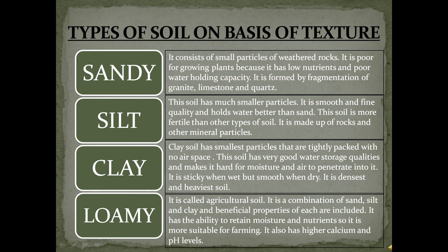Loamy soil is also called agricultural soil. It is a combination of sand, silt, and clay, and the beneficial properties of each are included. It has the ability to retain moisture and nutrients, so it is more suitable for farming. It also has higher calcium and pH levels.